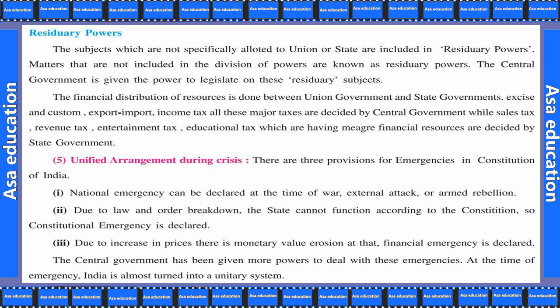Phir hai unified arrangement during crisis. There are three provisions for emergencies in the constitution of India. Ab teen praadhan ki gae hain, emergencies ko lekar constitution mein. National emergency can be declared at the time of war, external attack, or armed rebellion. National emergency ghoshit ki jayegi agar yudh ho jata hai, bahar se koi attack ho jata hai, ya hathiyaron se koi ek disha se balwa ho jata hai.